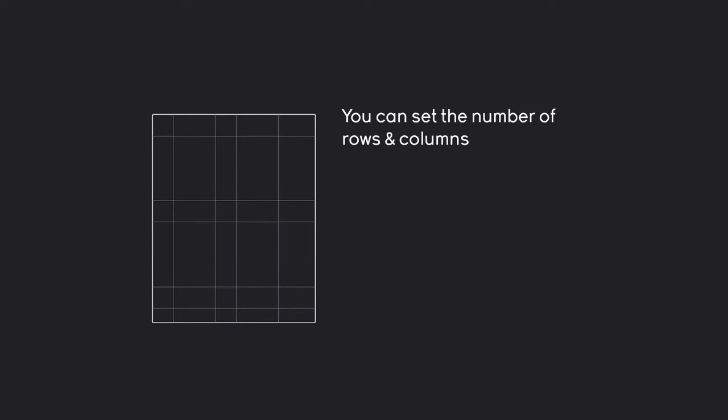Let's talk about how it works. When we are using the grid method, we are creating a grid. Inside of this grid, we can determine the number of rows and columns. On top of that, you can also set the width and the height of each column or row.